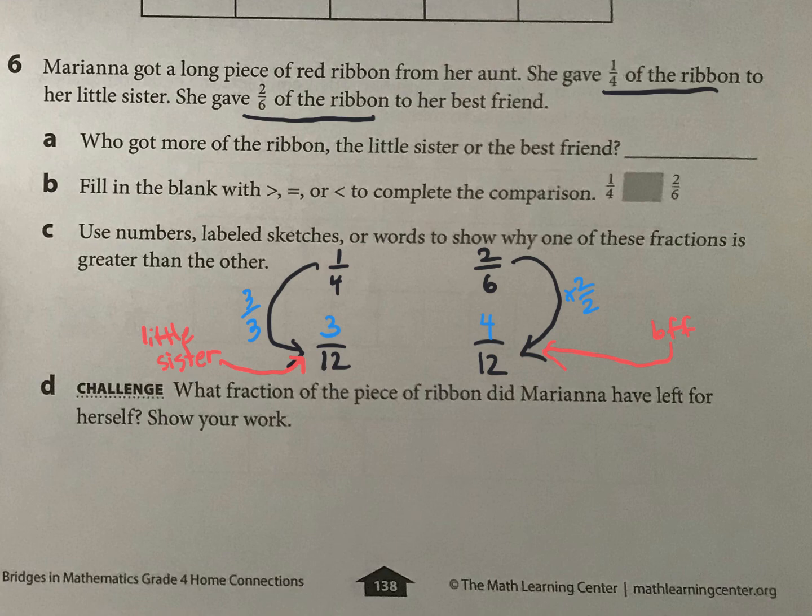So she's giving three twelfths to her little sister and four twelfths to her BFF. So what's left? So total, she's giving away seven twelfths, right?